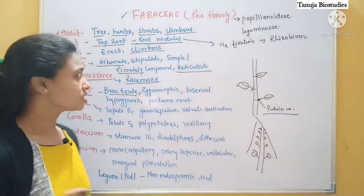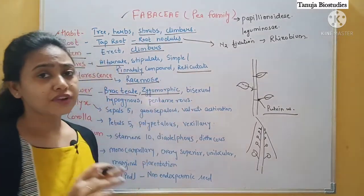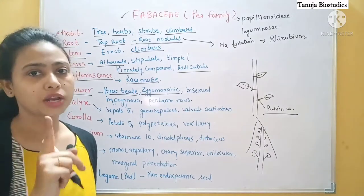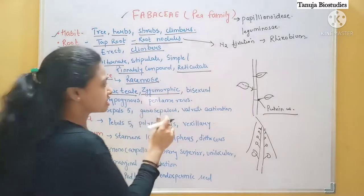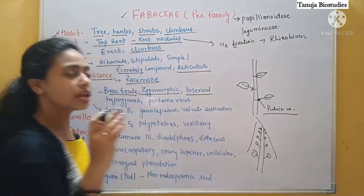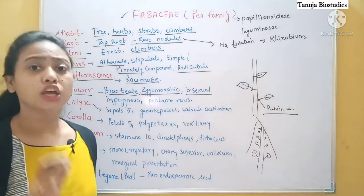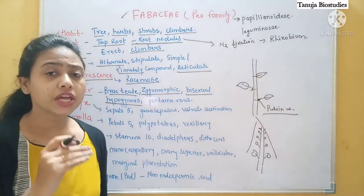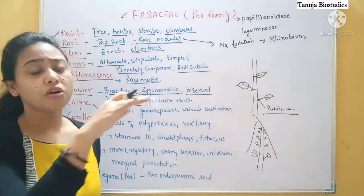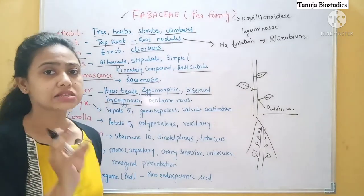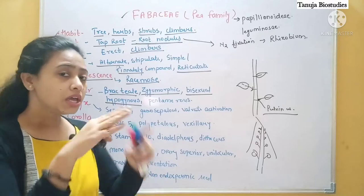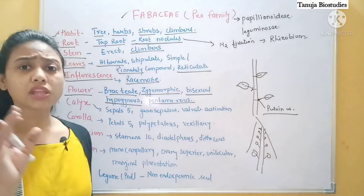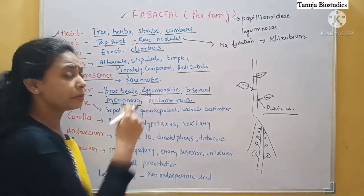Now the flower: it is bractate, meaning bracts are present. It is zygomorphic — divided into two equal halves at only one plane, which means bilateral symmetry. The flowers are bisexual — both male and female reproductive parts are present. The flower is hypogynous, meaning the ovary is in the top position and the calyx, corolla, and androecium are attached below it. The flower is pentamerous — five petals are present.